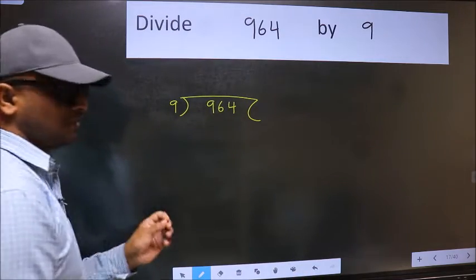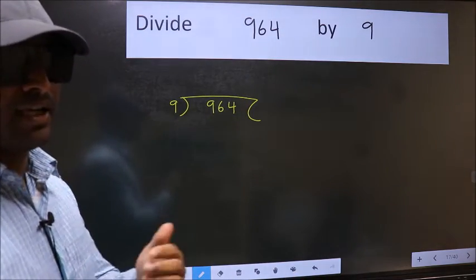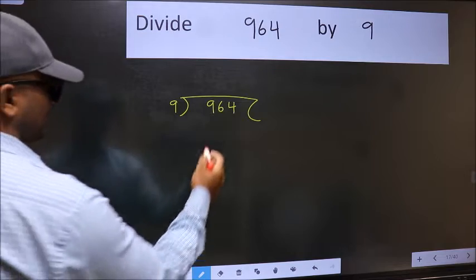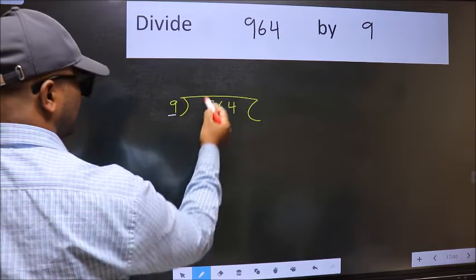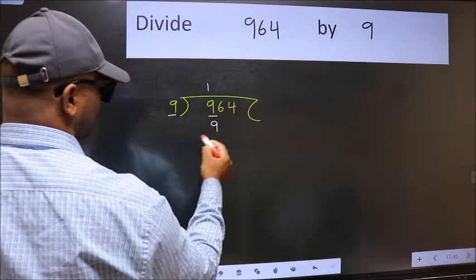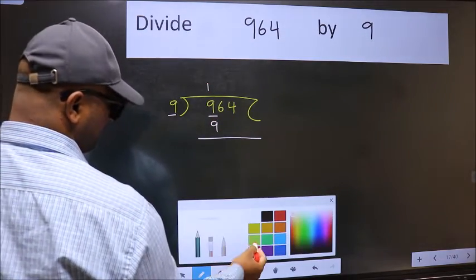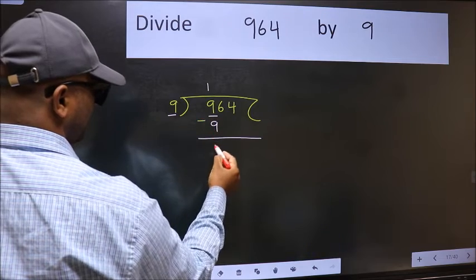This is your step 1. Next, here we have 9 and here 9. When do we get 9 in the 9 table? 9 once 9. Now we should subtract. We get 0.